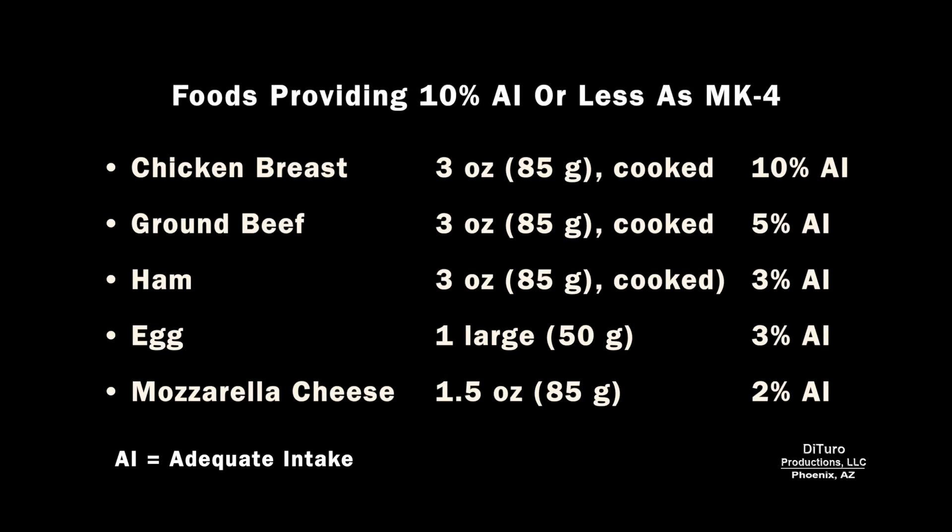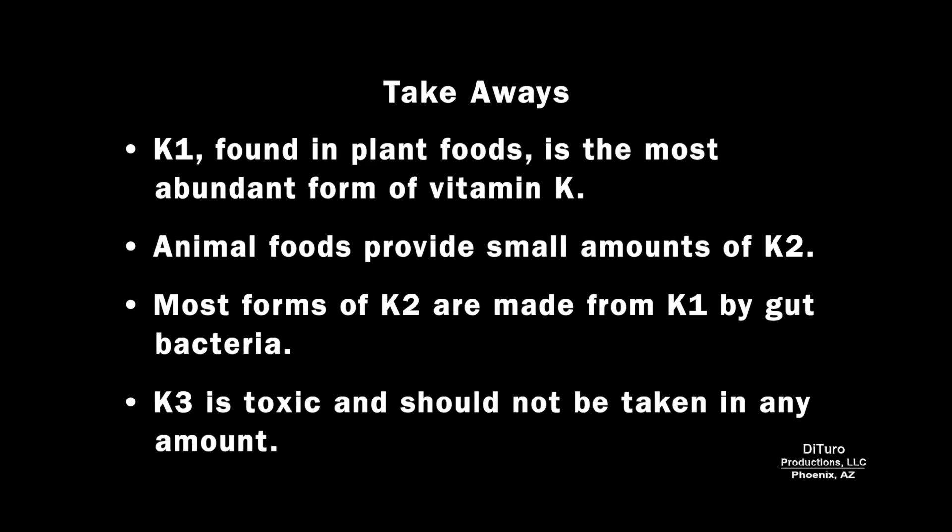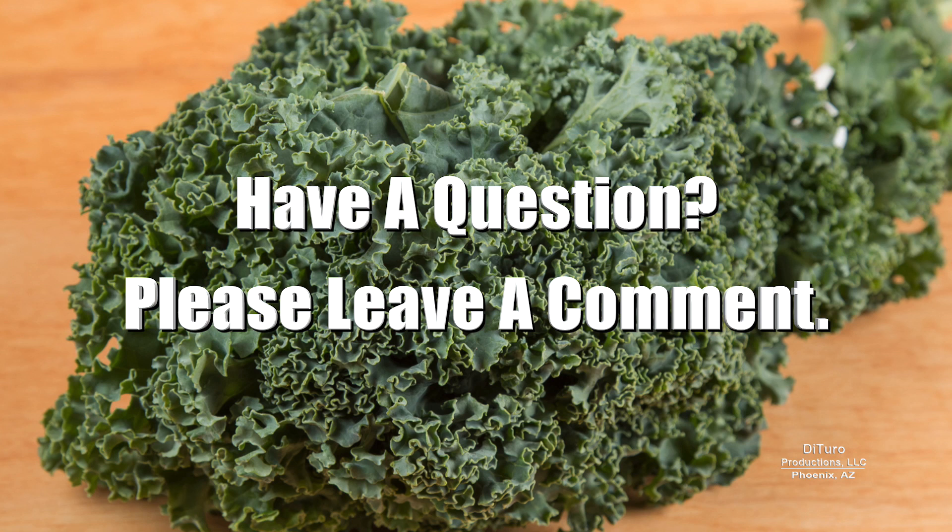By comparison, a serving of animal foods high in MK4 provides 10% or less of the recommended adequate intake. Some takeaways: K1 found in plant foods is the most abundant form of vitamin K; animal foods provide small amounts of K2; most forms of K2 are made from K1 by gut bacteria; and K3 is toxic and should not be taken in any amount. Please leave a comment if you have any questions. Thank you for watching and healthy eating.